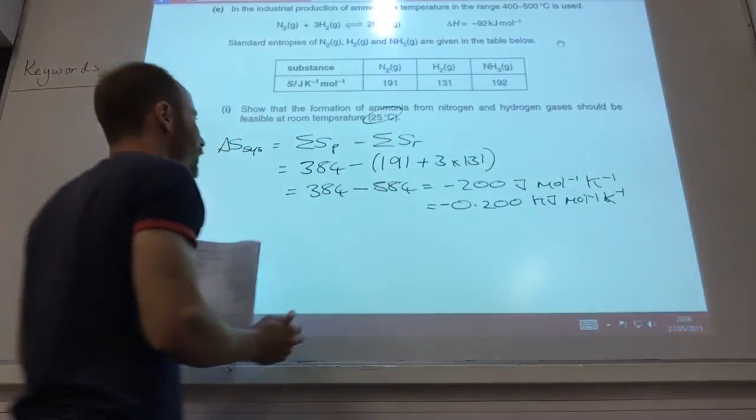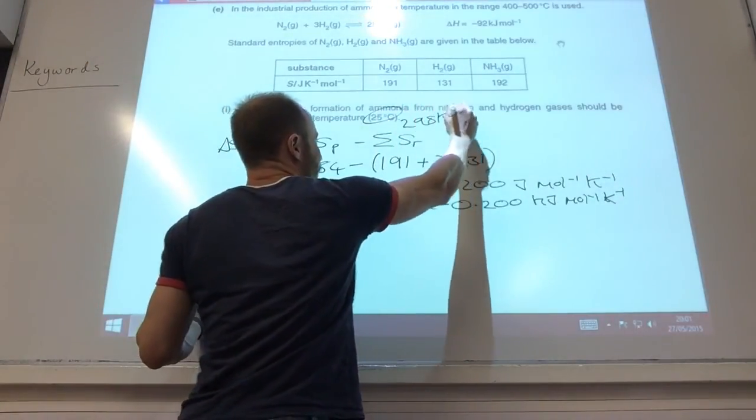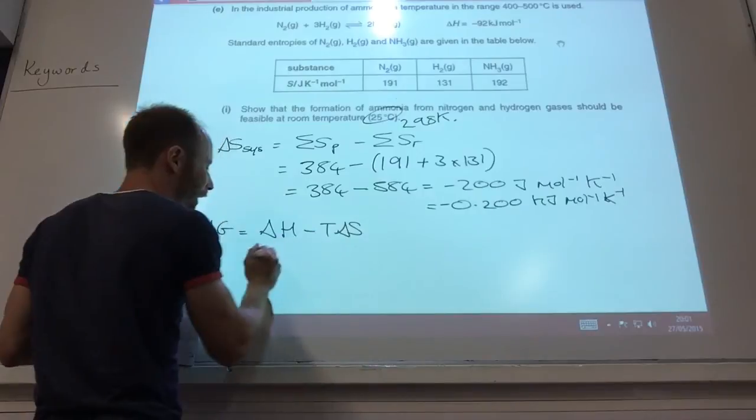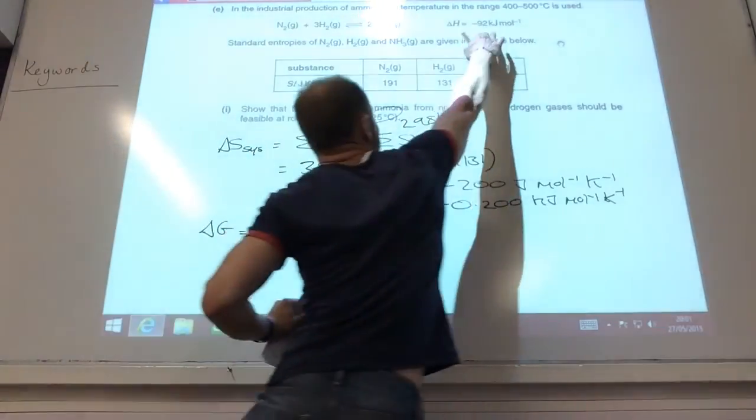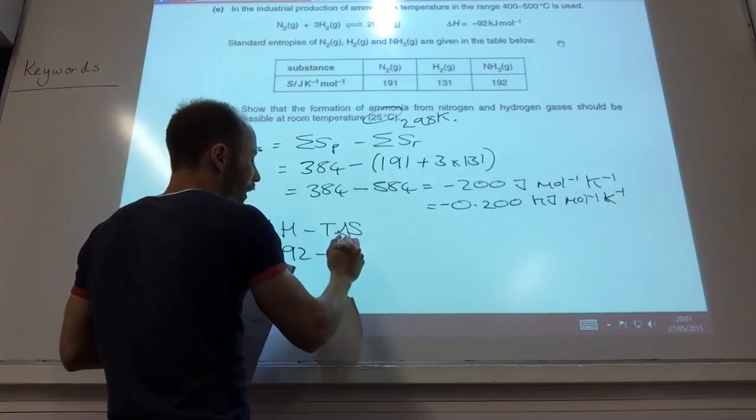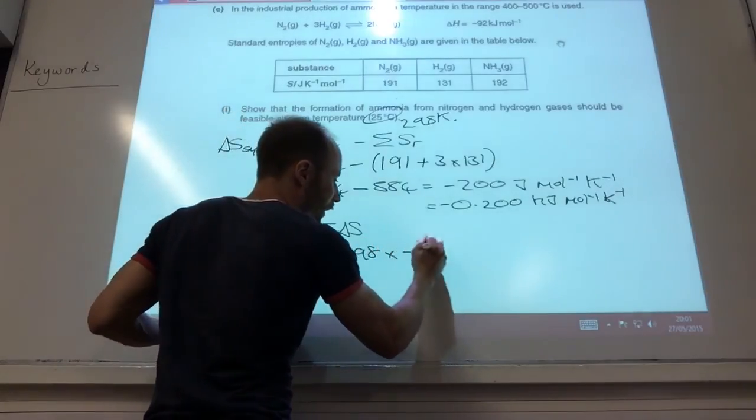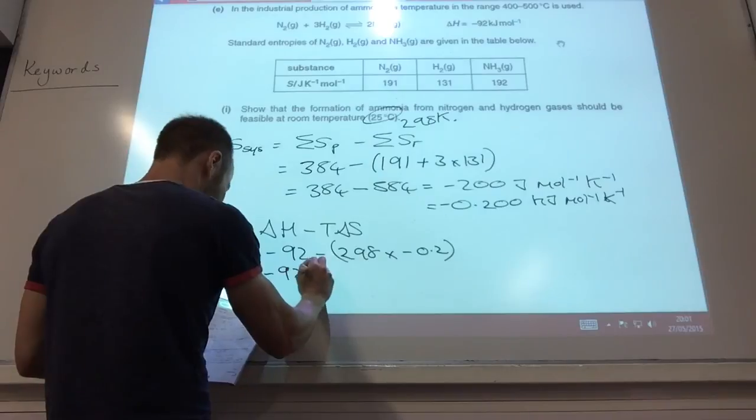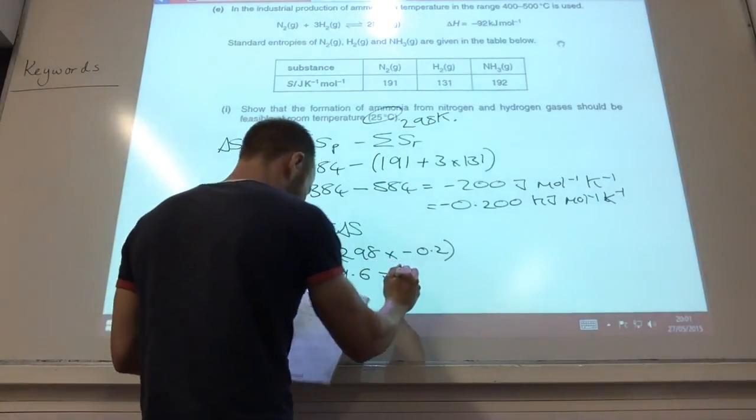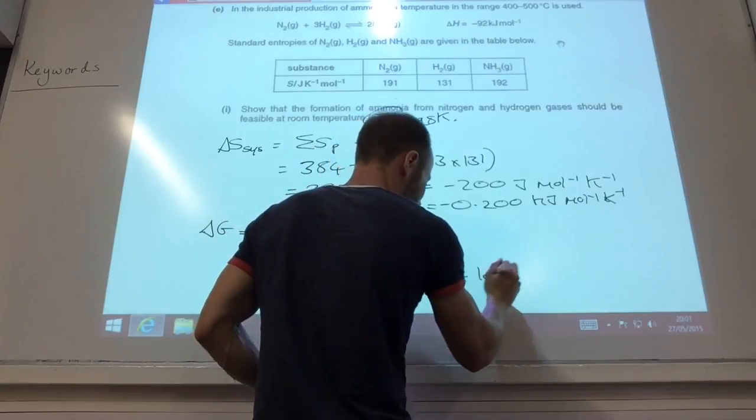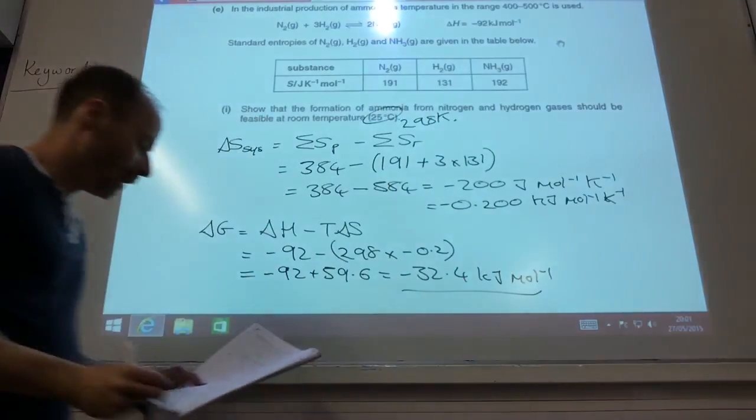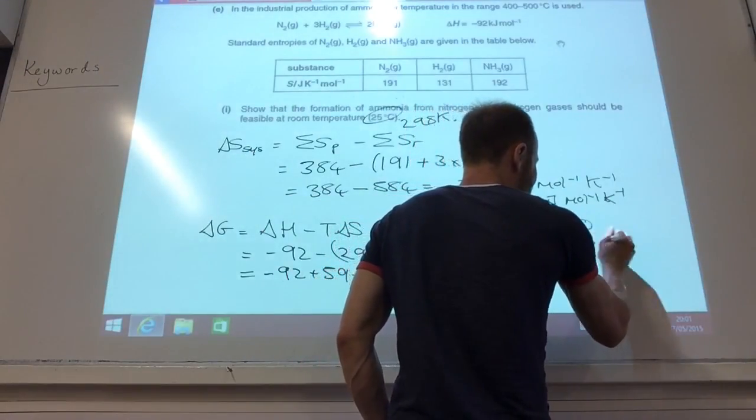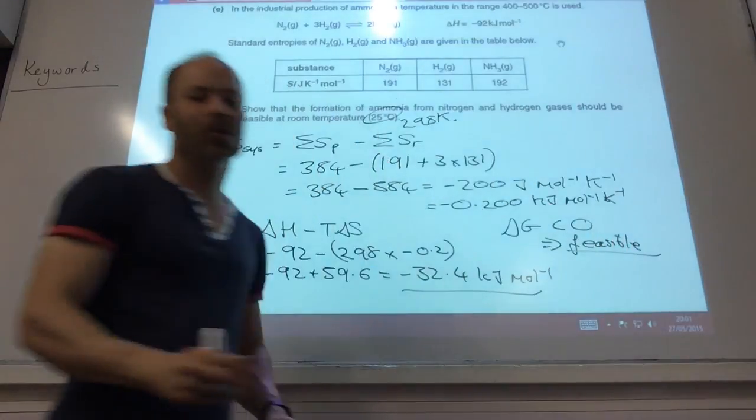Okay. They want me to do it at 25 degrees C, which we know is 298 kelvin. Gibbs free energy delta H minus T delta S. Delta H, they've told me, is minus 92, minus 298 times minus 0.2. That gives me minus 92 plus 59.6, which is minus 32.4 kilojoules per mole. Therefore, Gibbs free energy is less than zero, and therefore it is a feasible reaction.